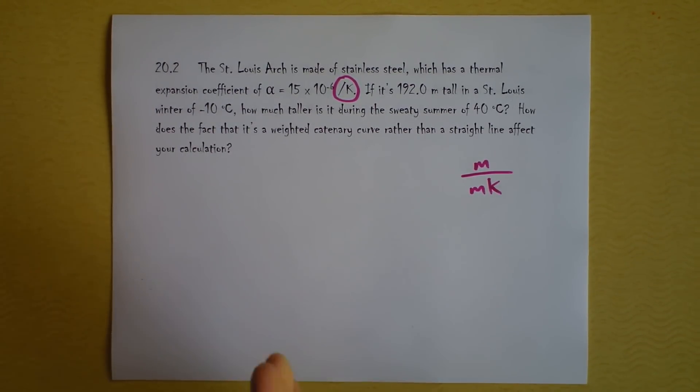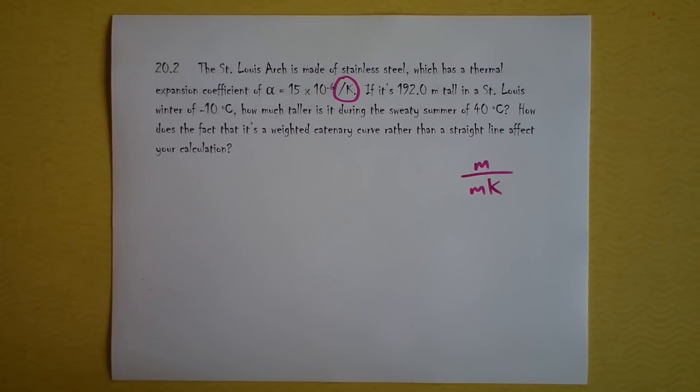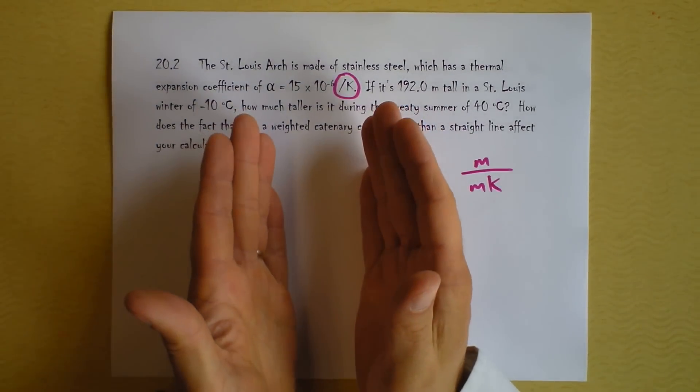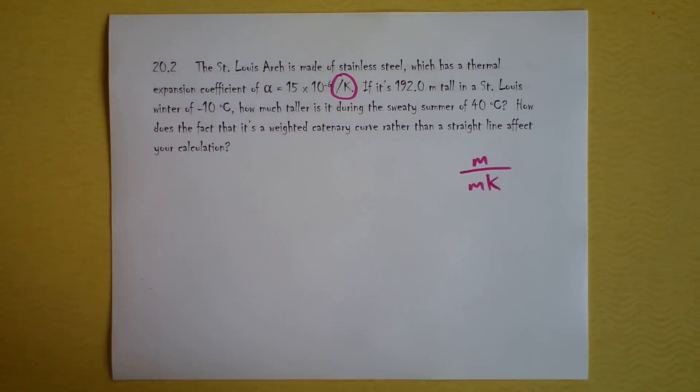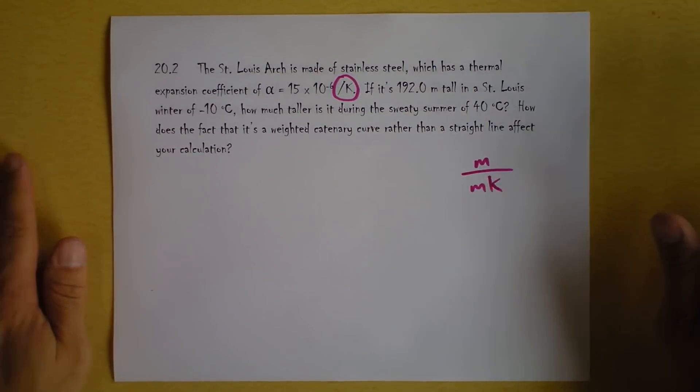If it's 192.0 meters tall in a St. Louis winter of negative 10 degrees Celsius, how much taller is it when it gets up to 40 Celsius around here? And does the fact that it's a weighted catenary curve rather than a straight line affect your calculation? This would be easier if the Washington Monument were made out of steel because it would just be straight up and you just do some multiplication. So we'll have to wonder about the effect of it being a curve, and if you're curious you could look up a weighted catenary because it's a really interesting idea that crazy architect came up with.